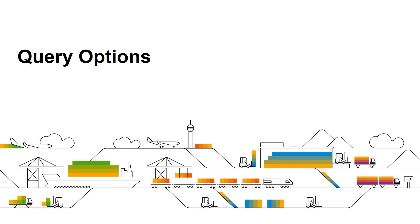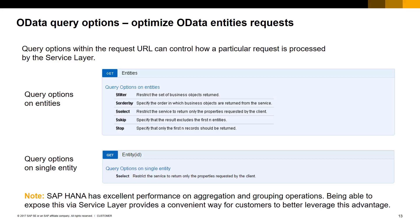Let's now talk about SAP Business One Service Layer supported query options. Query options within a request URL can control how a particular request is processed by service layer. As service layer is based on the OData protocol, OData queries can be applied to both collections of entities and single entities via the HTTP method GET.